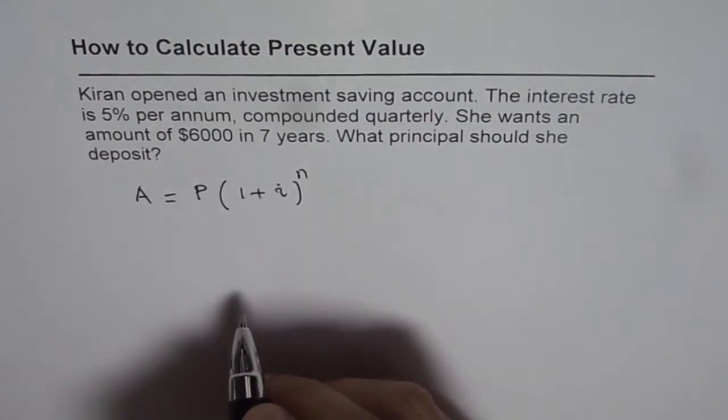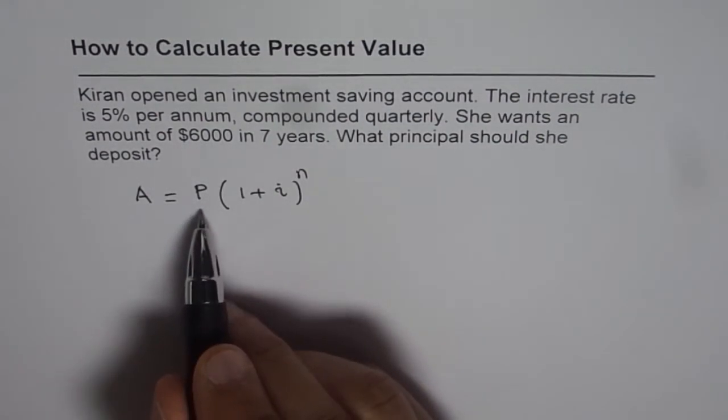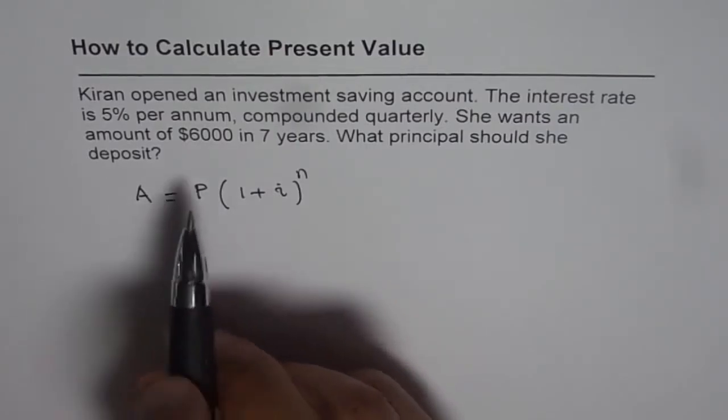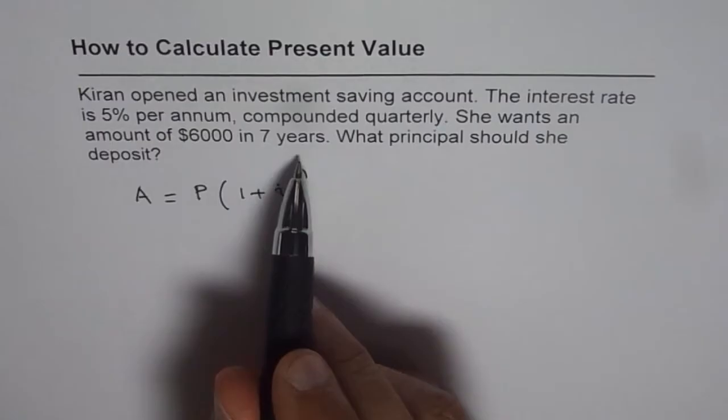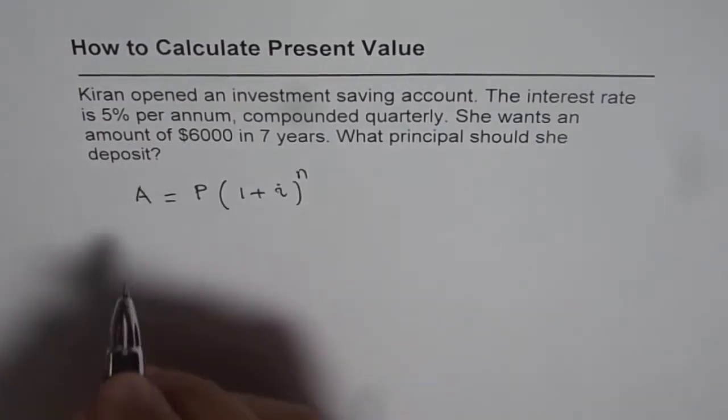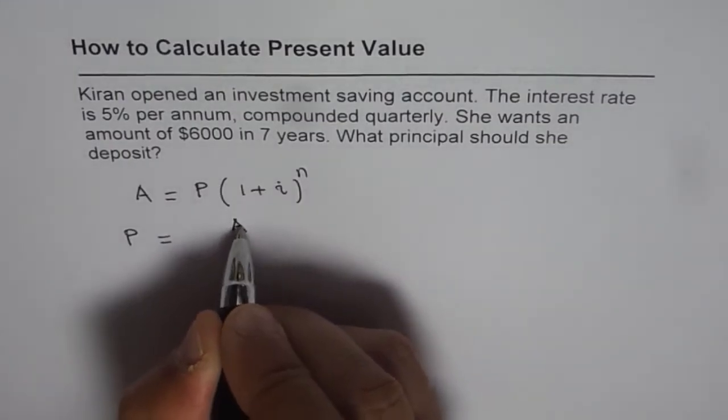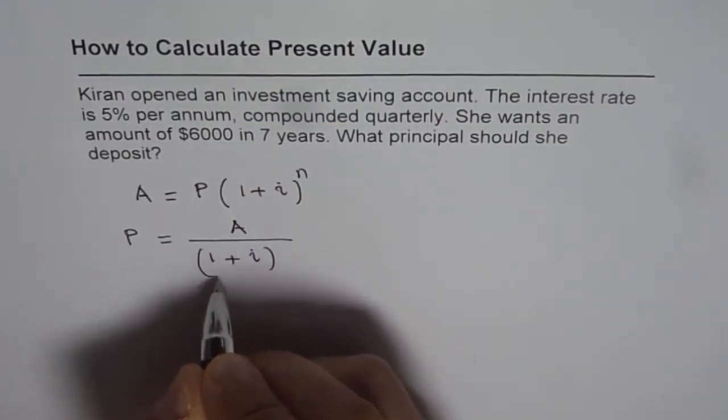In this particular question, we want to know what is the present investment required for a given future value. So here $6,000 is the future value which Kiran wants after 7 years. So we can rearrange this formula and write present value P equals A divided by (1 plus i) to the power of n.